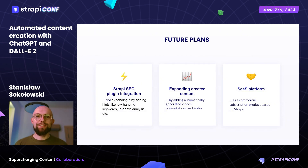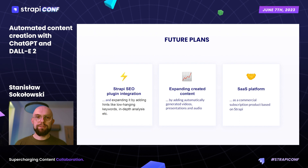But of course, this is not the end. We would like to develop our tools in three main directions: combining Strapi SEO plugin with our tool and expanding it by adding hints like low-hanging keywords, deep analysis, etc.; expanding content creation by adding automatically generated videos, presentations, and audio; and a Software as a Service subscription platform based on Strapi.